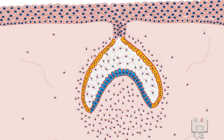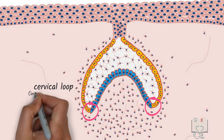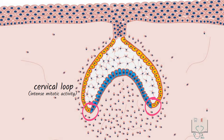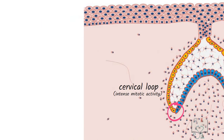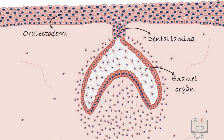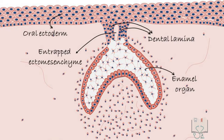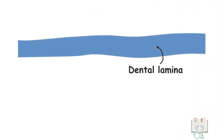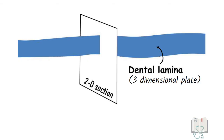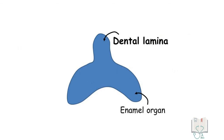The junction of the inner enamel epithelium and outer enamel epithelium is known as the cervical loop. It is an area of intense mitotic activity as the size of the cap rapidly increases in this direction. The dental lamina still attaches the enamel organ to the oral ectoderm. Sometimes in a histological section, two or more dental laminae may be seen with entrapped ectomesenchyme — this entrapped ectomesenchyme is called the enamel niche. This appearance is not because there are two dental laminae; it is because the dental lamina is a three-dimensional plate which is seen in a two-dimensional section.